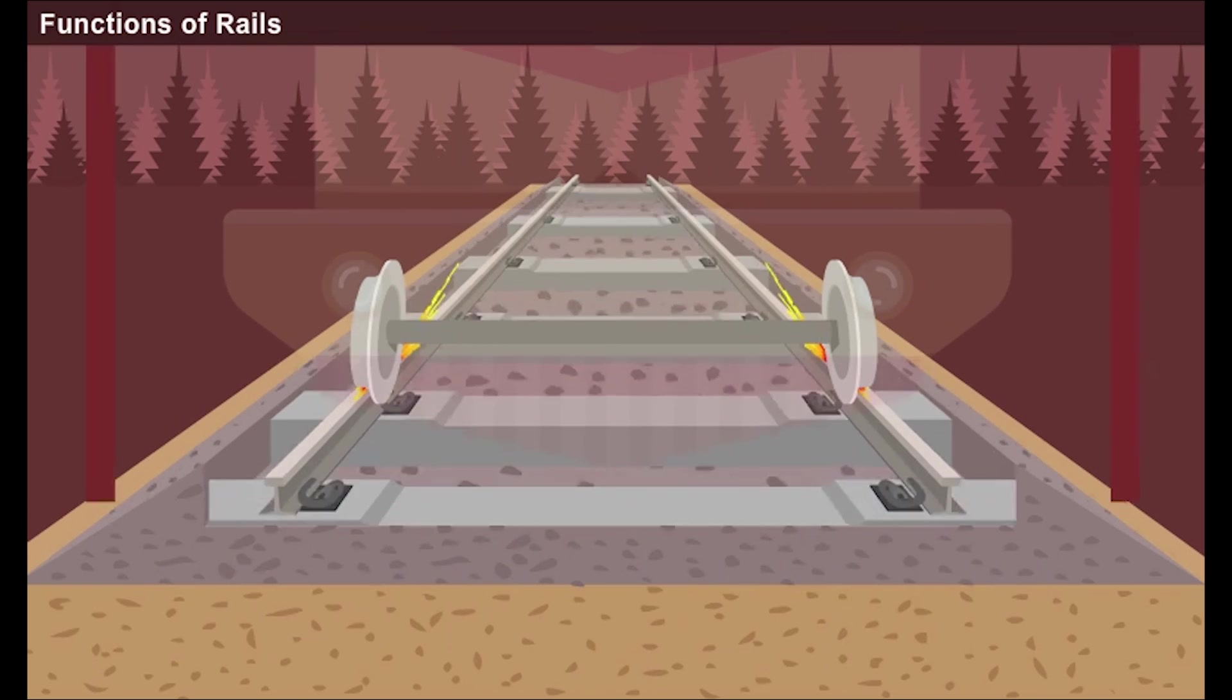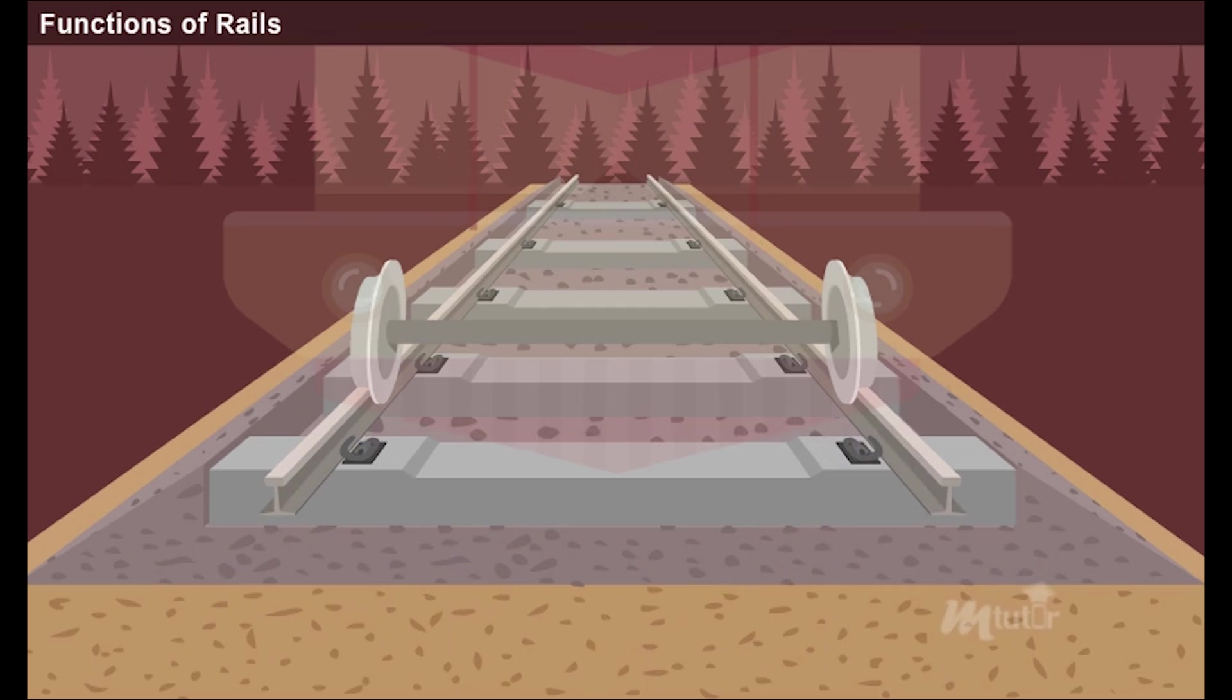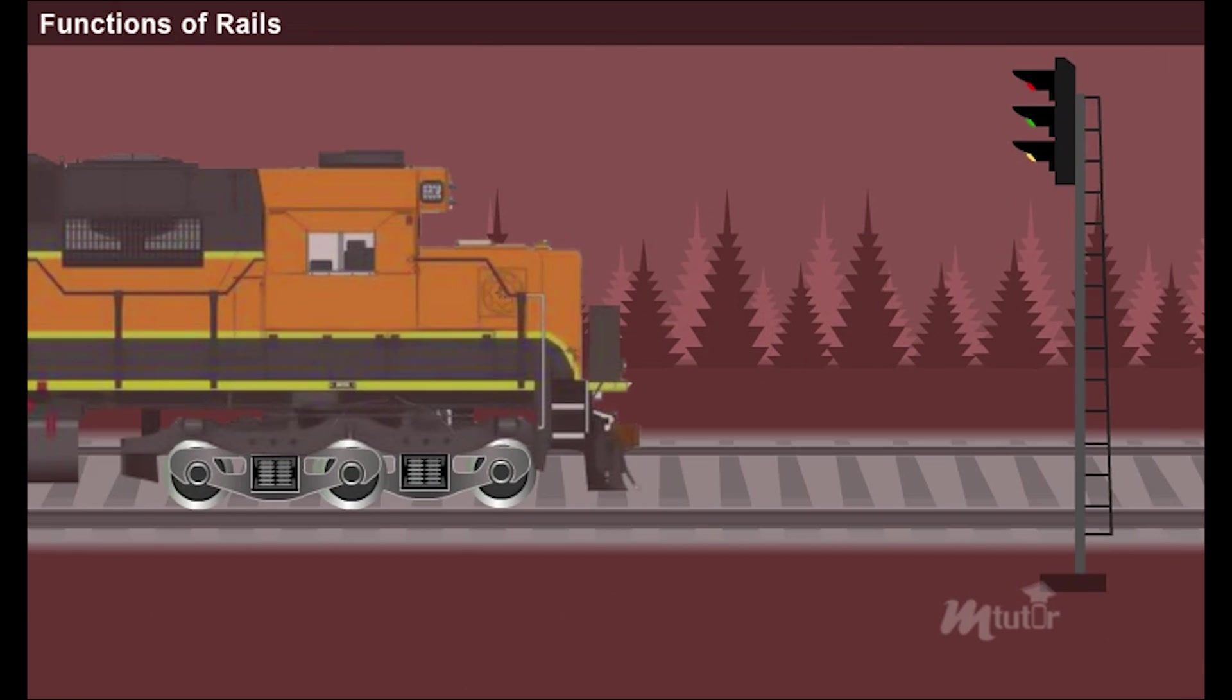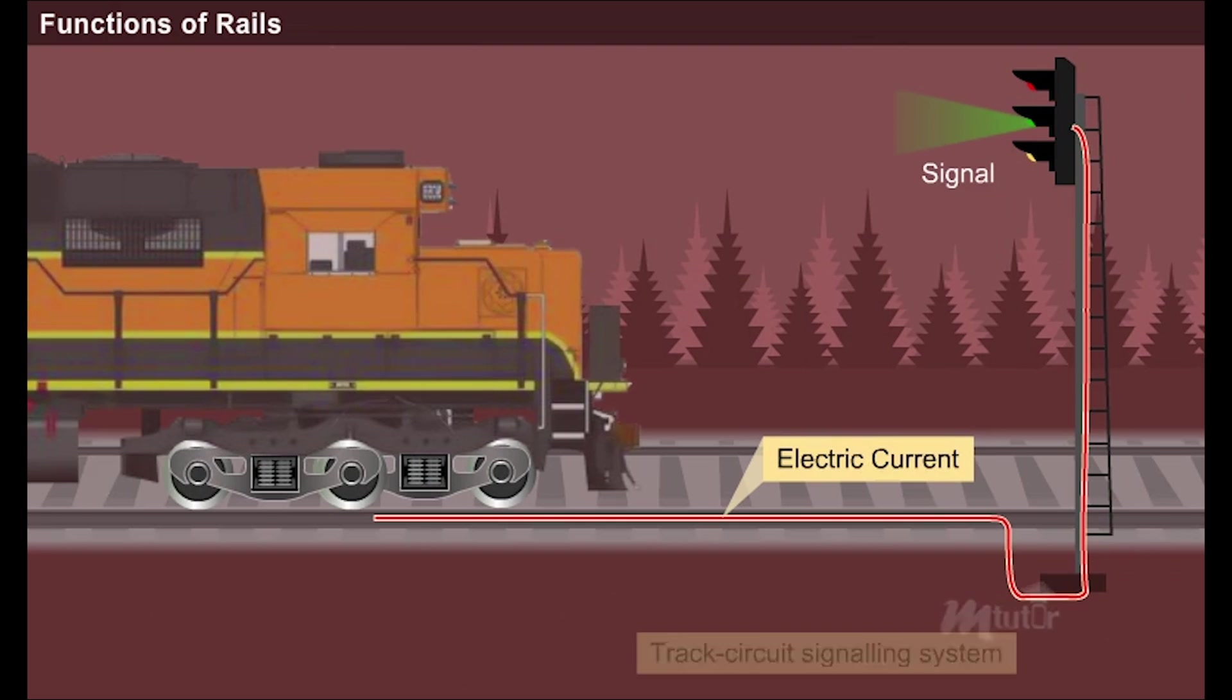Rails are used to conduct electric current to attract circuit signaling system for detecting the presence of a train on the given section of the track.